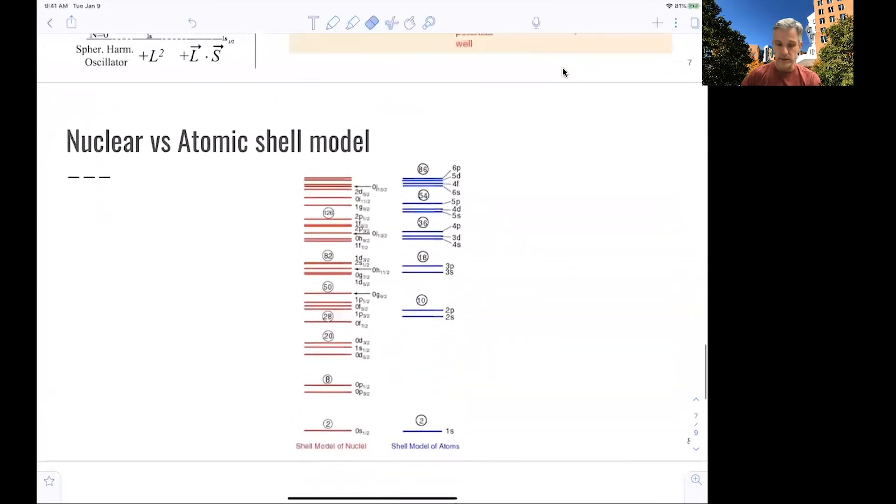As a comparison here, the nuclear and atomic shell models, just for an example. You see we call them shells because the energy gaps between individual shells are quite large, much larger than within the shell. This is for the atomic model and for the nucleus, you see, very similar. It's not that extended, but still larger gaps in energy when you go from one state to the next.